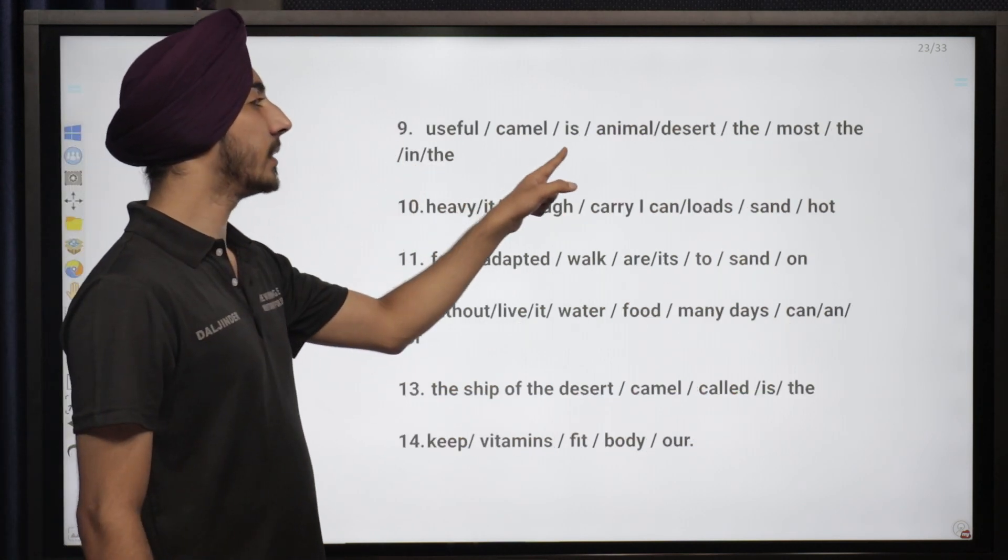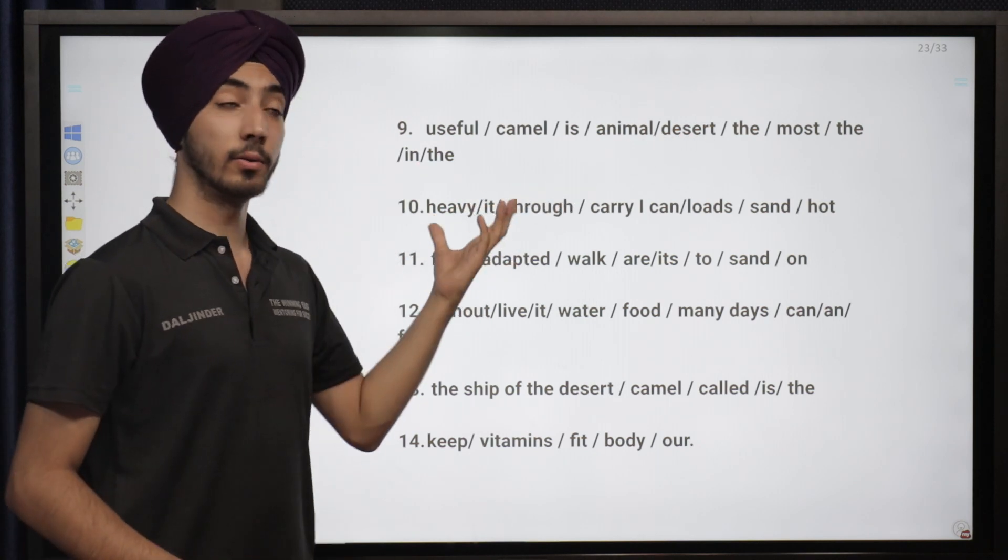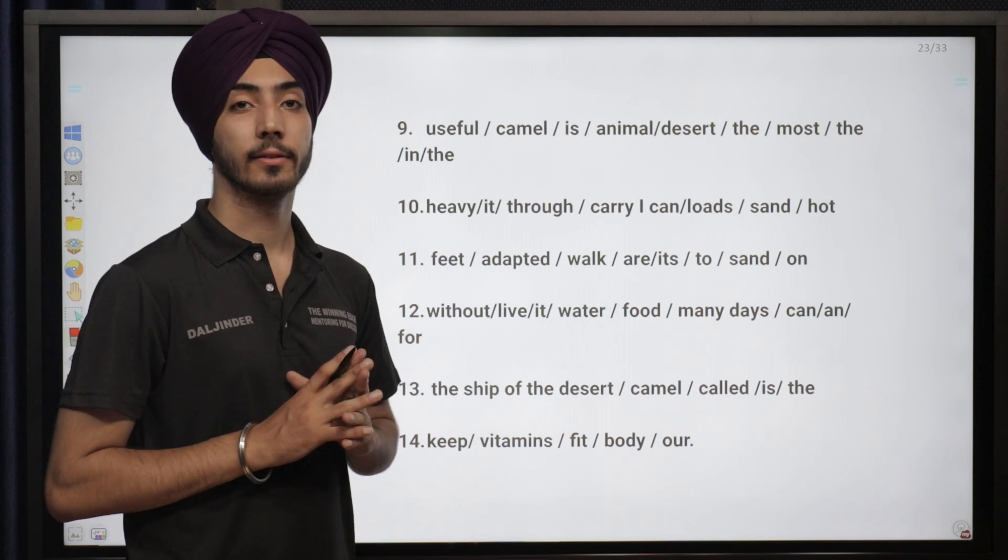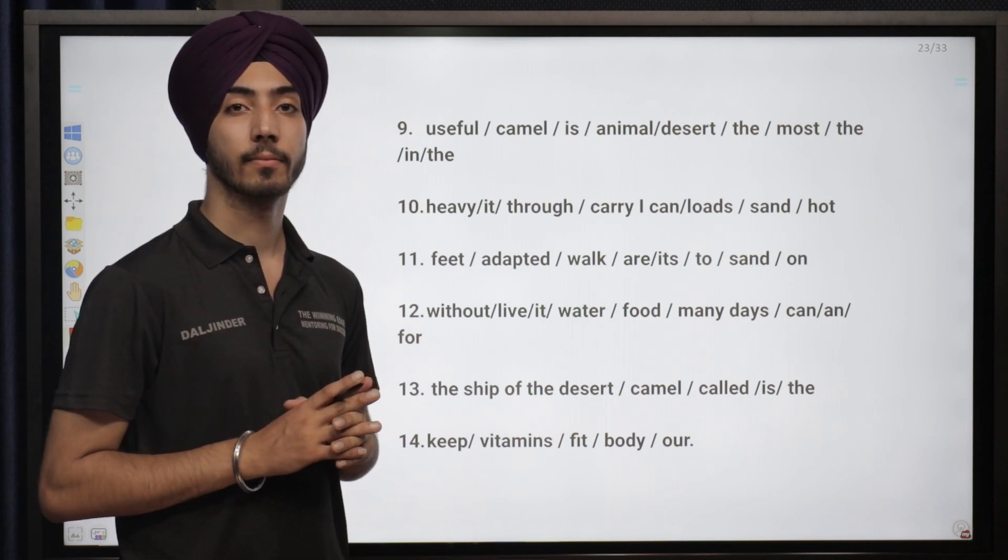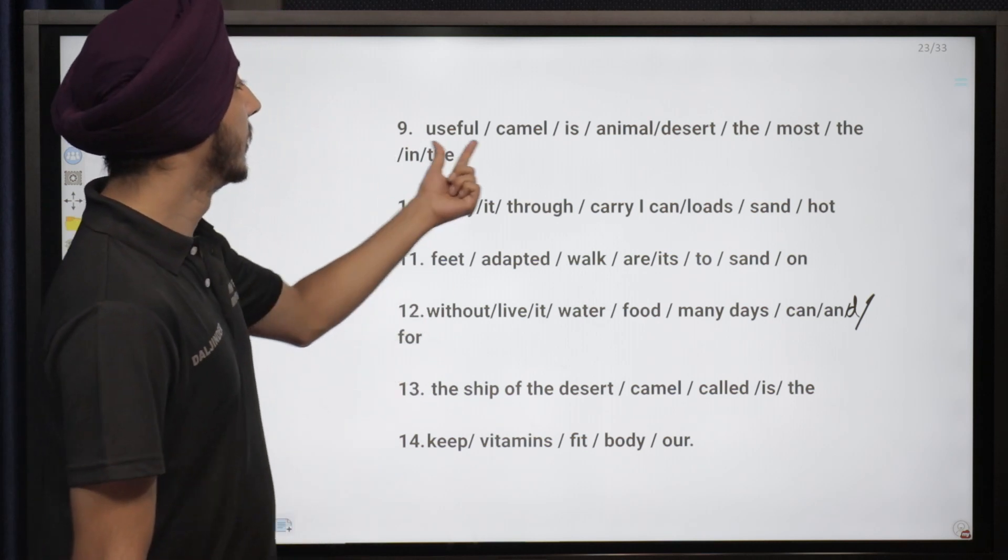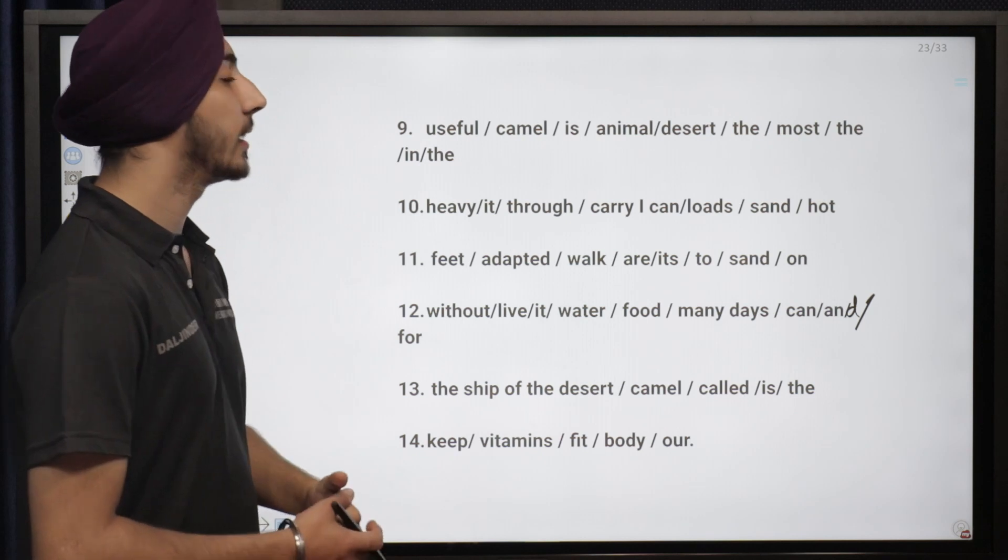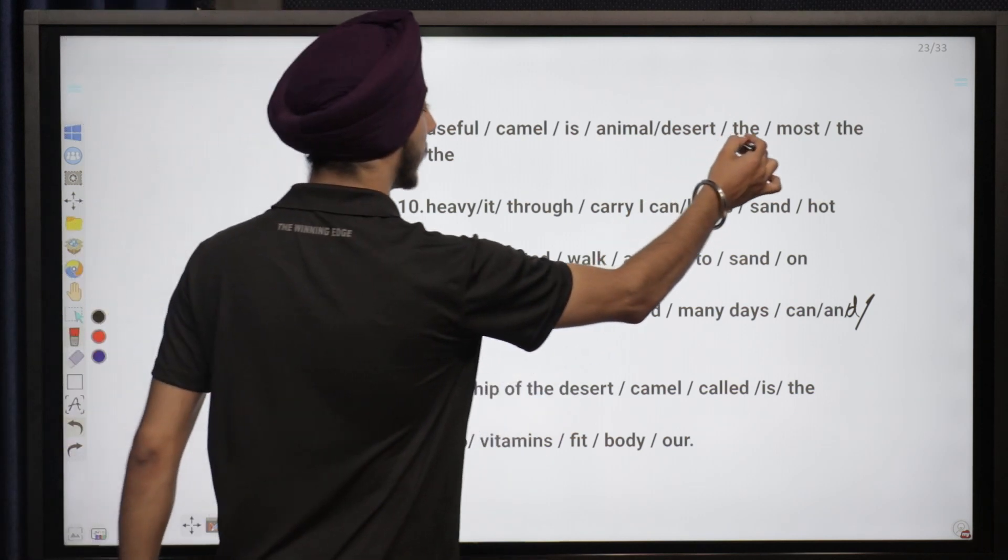Useful camel is animal desert the most the in the. Now I want you guys to find it. Let's see its answer now. The camel is the most useful animal in the desert.